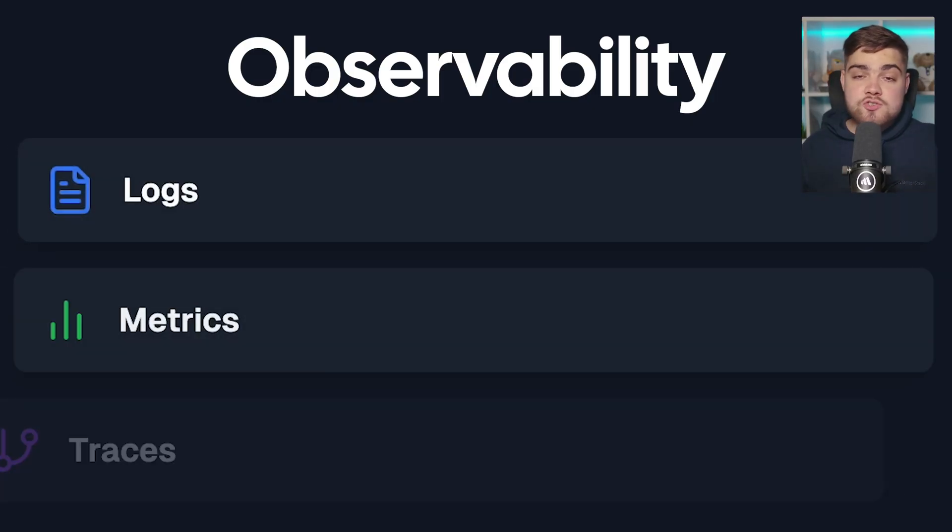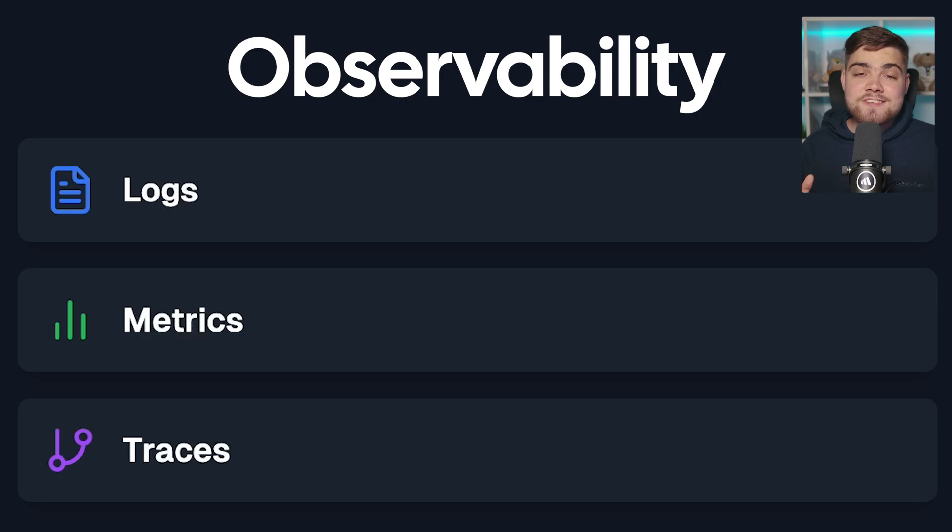Observability has come about because modern systems are incredibly complex — we have microservices, cloud infrastructure, containers — which means there are countless ways things can go wrong. Observability gives us three key tools to look into issues: structured logs for detailed event records, metrics for system performance data, and distributed tracing to follow requests end to end. The real magic of observability is how these work together to help you understand any state your system might get into, even ones you never anticipated.